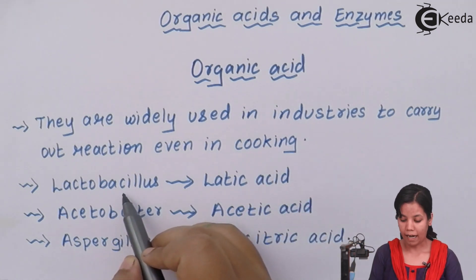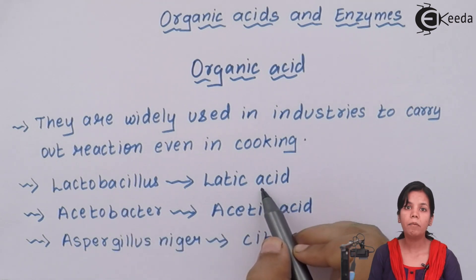For example, lactobacillus, an organism is used for the production of lactic acid. Even milk has a certain amount of lactic acid naturally.